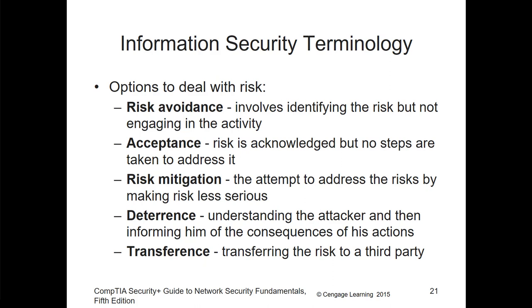Options to deal with risks include risk avoidance, risk acceptance, risk mitigation, deterrence, and transference. Risk avoidance involves identifying a risk but not engaging in it. Acceptance is acknowledging it and not performing any steps to address it. Risk mitigation attempts to address the risk by making it less serious. Deterrence involves informing attackers of the consequences of their actions. Transference means transferring the risk to a third party.